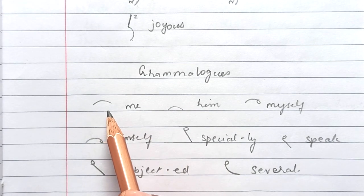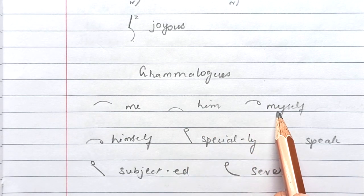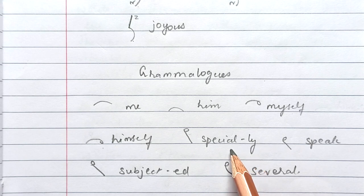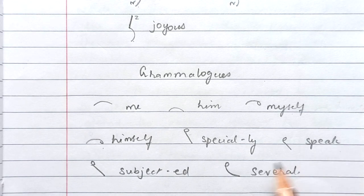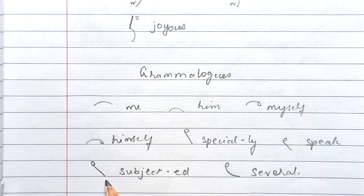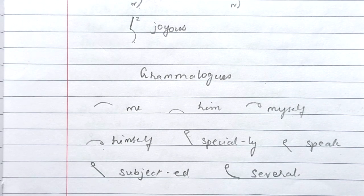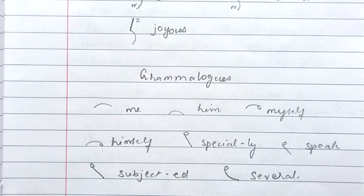Today's grammar logs: M above the line means 'me'; M on the line means 'him.' M-circle-S above the line is 'myself'; on the line is 'himself.' S-P on the line is 'special' or 'especially'; written through the line it means 'speak.' S-B on the line is 'subject.' S-V on the line is 'several.' I hope you understood when stroke S should be written. Keep practicing — I'll see you in my next video with a new lesson.